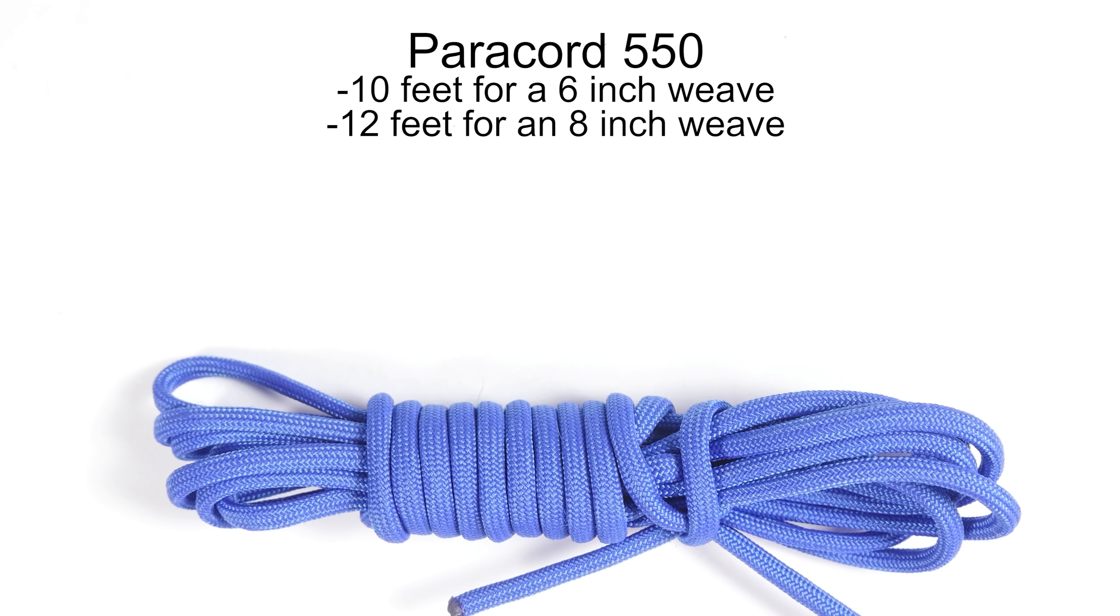For the supplies the first thing that you're going to need is a single piece of paracord. This piece should be 10 feet long for a 6 inch weave or 12 feet long for an 8 inch weave. Next you're going to need a 5/8 inch bracelet buckle.